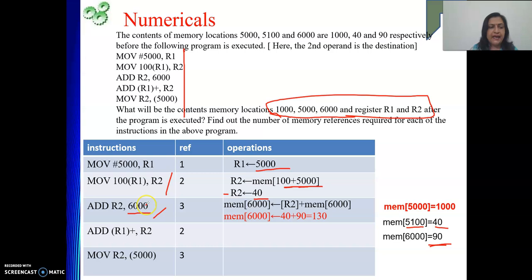Next. Add R1+, R2. So see, in this, we are using auto increment addressing mode. So where is your operand? That means it will be there in register R1. Address will be there in R1. So what is R1's content right now? Till these instructions have executed, what is the value of R1? 5000. So what is the content of 5000? That is 1000. So 1000 plus what we have to do? Content of R2. What is the content of R2? 40. That we need to do.